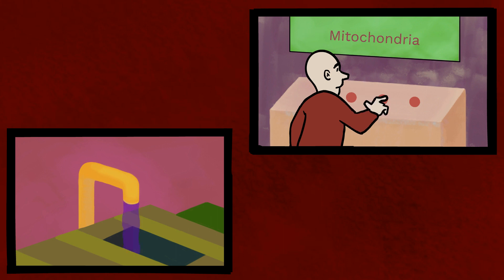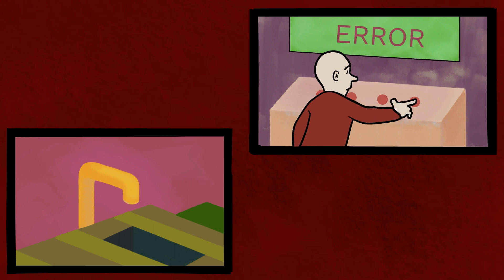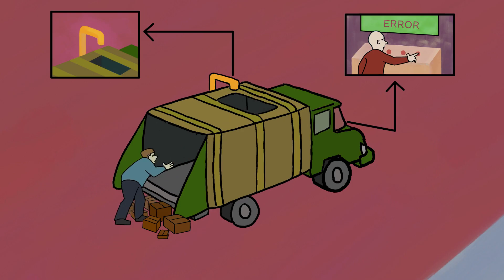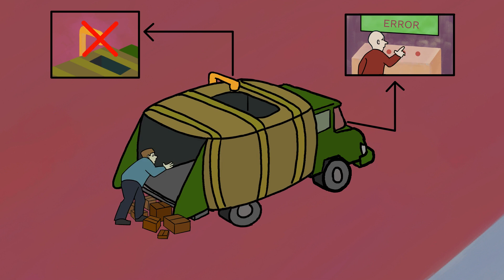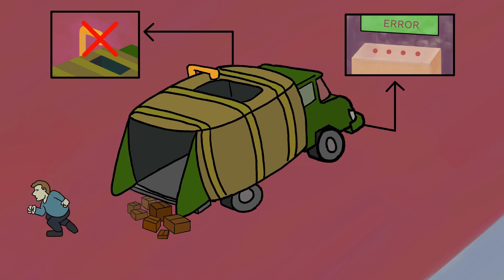But if you have Pompe disease, you lack the enzyme in your lysosome to break down glycogen molecules. The resulting glycogen buildup is the root of all the problems associated with Pompe disease.